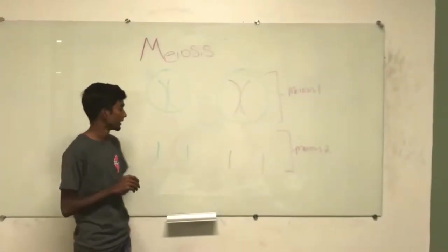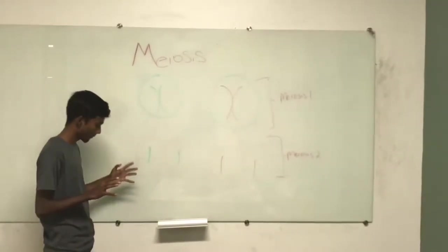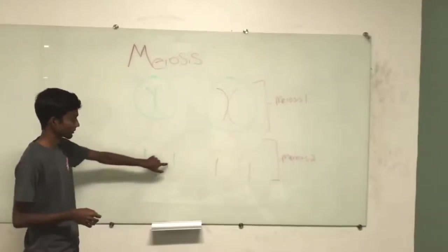In meiosis 2, there's no S phase, nothing gets synthesized. Sister chromatids are separated furthermore into singles.